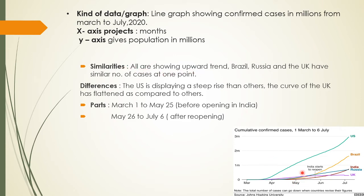The next letter is S — Similarities. All five countries are showing an upward trend. Brazil, Russia, and the UK have a similar number of cases at one point. Next, from D we have Differences. The US is displaying a steeper rise than others, and the curve of the UK has flattened as compared to others. Those are the two key differences.